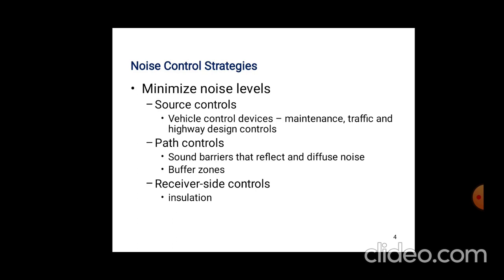Path controls include sound barriers that reflect and diffuse the noise, and buffer zones provided to control noise. The last one is receiver-side controls—at the receiver, insulation is provided for noise control.